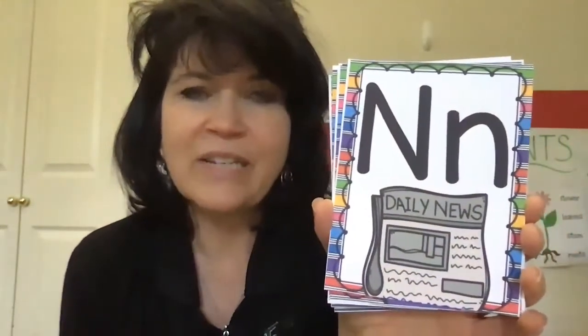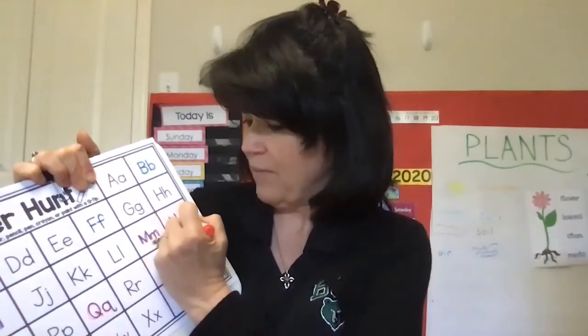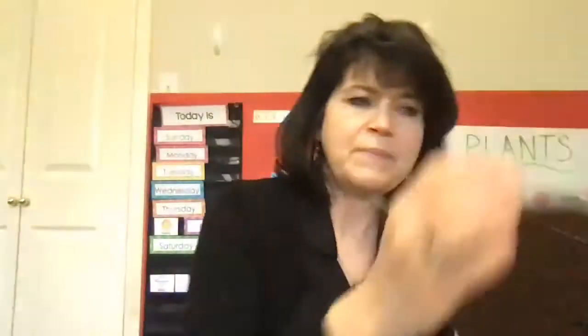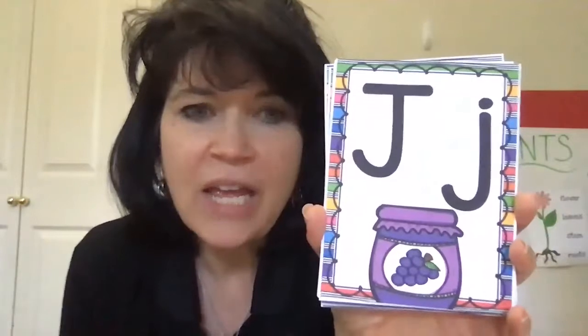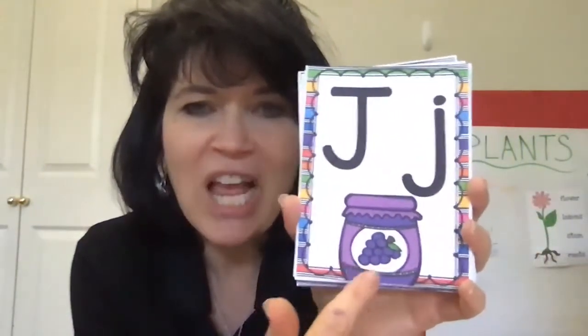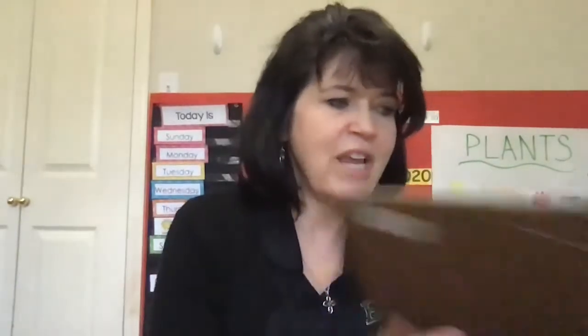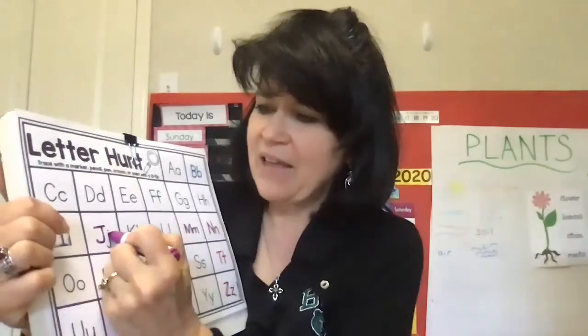Here comes our next letter — this is the letter N. N says 'n' as in newspaper. Find your N on your paper and mark it. Look how many we have so far — all those colors! Here comes our next letter — it says J. J says 'j' as in jam, or jelly, or jar. Mark your J sound — trace that.